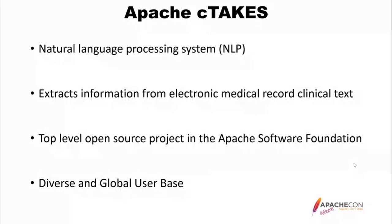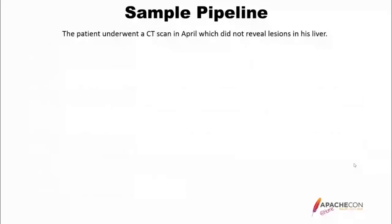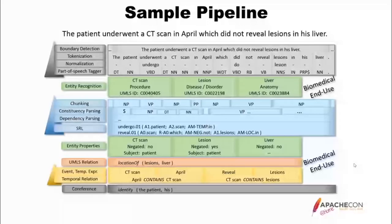cTAKES has a lot of key features, all listed on the cTAKES website. The last slide in this presentation is a series of links to mail groups and the cTAKES website so you'll be able to see those later on. We're going to go through a sample pipeline — and this is not the only pipeline you can run with cTAKES. cTAKES is extremely versatile. We've got some text: 'The patient underwent a CT scan in April, which did not reveal lesions in his liver.'